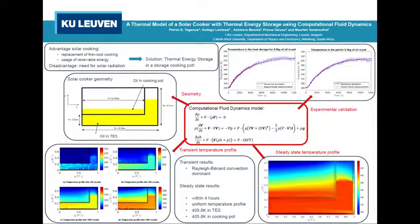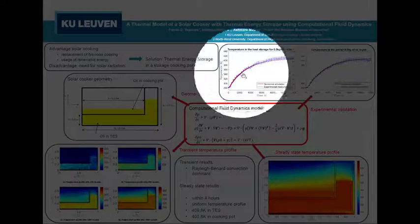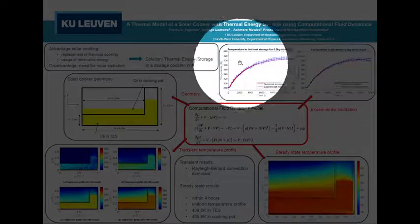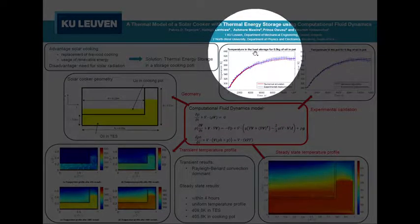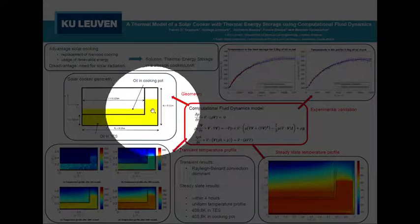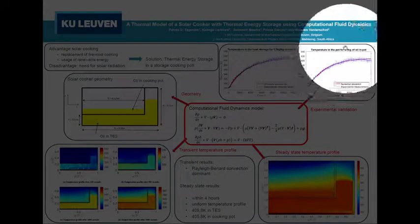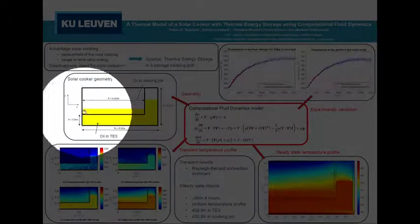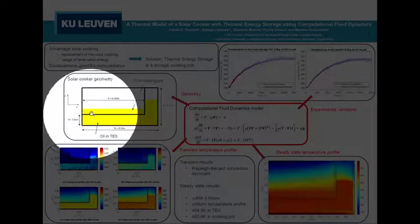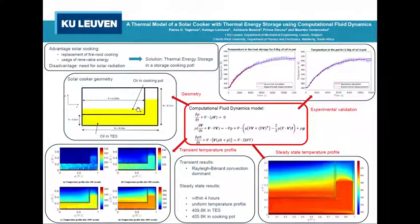So first of all, we performed a validation of the experiments where you can see here the temperature in the storage, which is the temperature here in this compartment. And we also have the temperature inside the pot itself, which is the temperature here. And that's actually the oil which is used to cook or to bake the food.